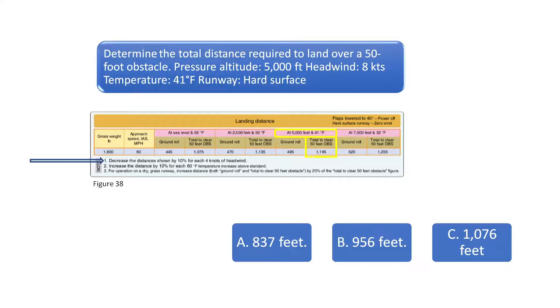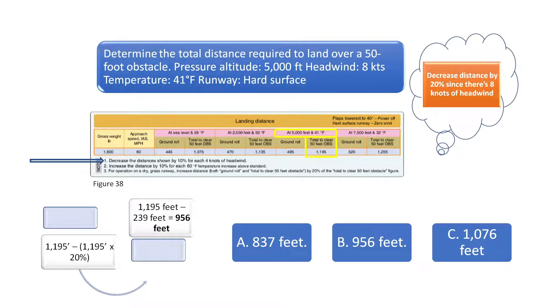Since there is an 8-knot headwind, we can decrease the distance shown by 20% since a 10% reduction is required for each 4 knots of headwind as indicated in the chart. 20% of 1,195 is 239. Subtract 239 from 1,195 feet to get the correct distance required to land over a 50-foot obstacle of 956 feet. The correct answer is B.